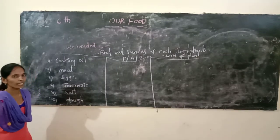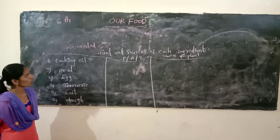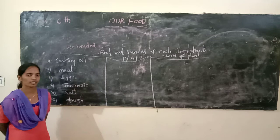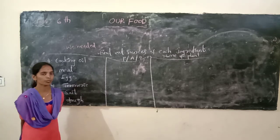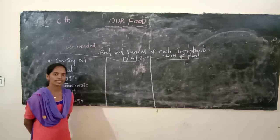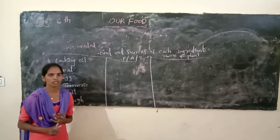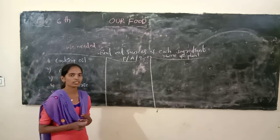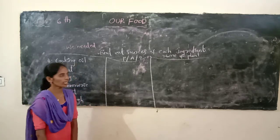We need so many ingredients for preparing food items. Next, where do we get food? We get food mostly from plants and animals. Fruits, vegetables, grains, and nuts come from plants. Milk, meat, and eggs come from animals.